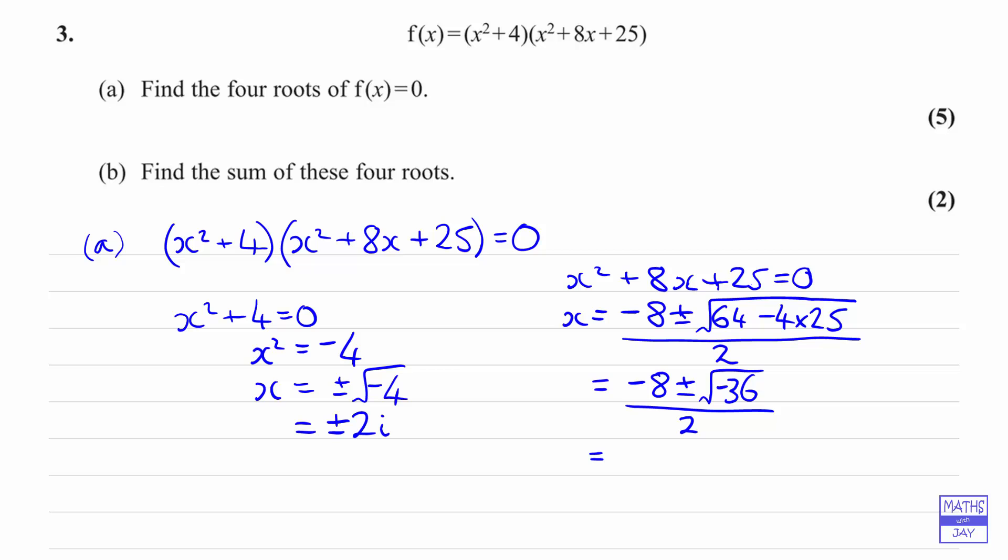So we've got -8 plus or minus, well square rooting 36 gives us 6 and the square root of -1 gives us i, so plus or minus 6i over 2. So that will give us that x is -4 plus or minus 3i.